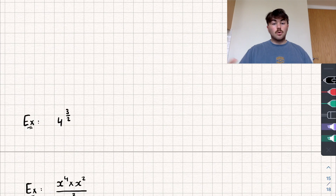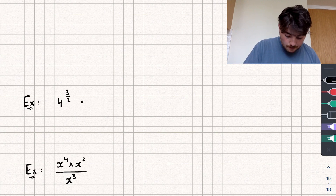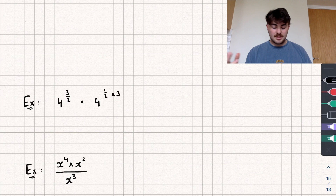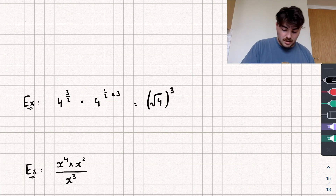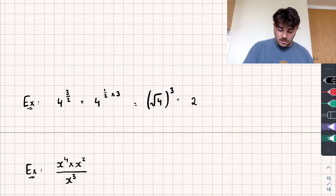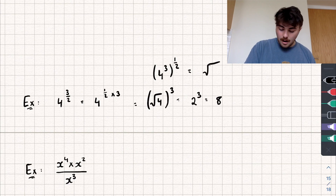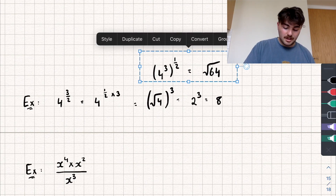Let's apply these facts to some examples. First: four to the power of three over two. We can write this as four to the power of one half, all cubed. The square root of four is two, and two cubed equals eight. Alternatively, you could do four cubed first to get 64, then take the square root of 64 — but it's usually easier to square root first and then cube, since you're dealing with smaller numbers.